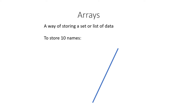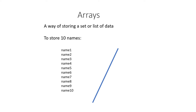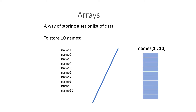To store 10 names, you could have 10 variables: name1, name2, name3, and so on all the way to name10. But an array declared as names[1:10] would give you ten blocks in which to store all ten names, and it's a much smarter way of working.